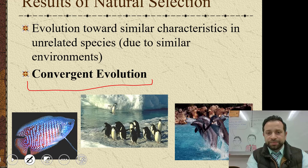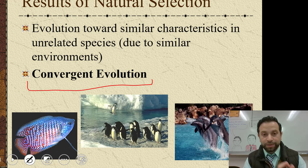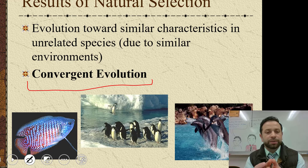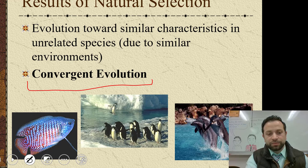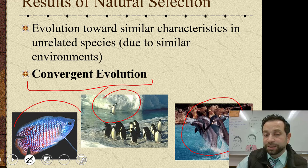Convergent evolution means evolution towards similar characteristics. There's a misconception here — it's not that organisms are evolving together to become one. Because of their environments, they are evolving in a direction where their characteristics start to resemble each other. Think about a fish, a penguin, and a dolphin: they don't all have the same origin, but they all have the ability to swim.